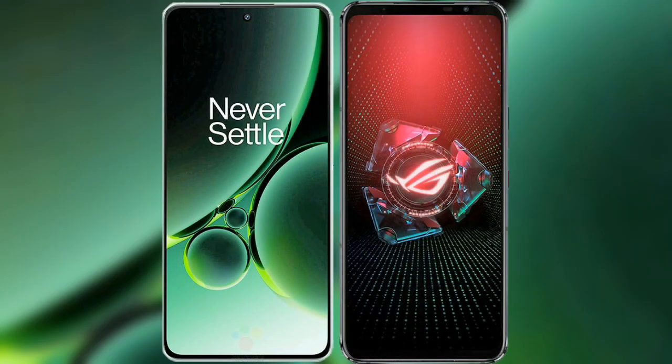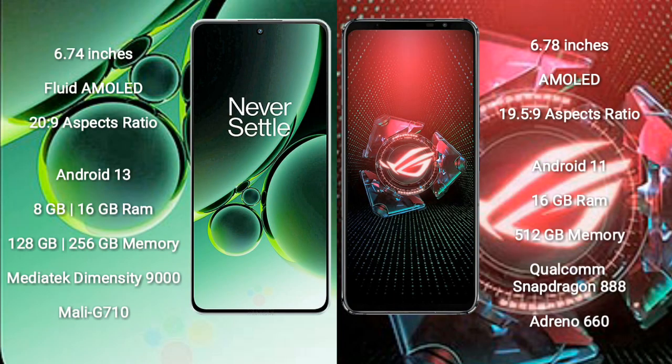I will compare the new OnePlus Nord 3 with ASUS ROG Phone 5 Pro. OnePlus Nord 3 comes with a 6.74-inch flat AMOLED display and aspect ratio 20:9. ASUS ROG Phone 5 Pro comes with a 6.78-inch AMOLED display and aspect ratio 21:9.